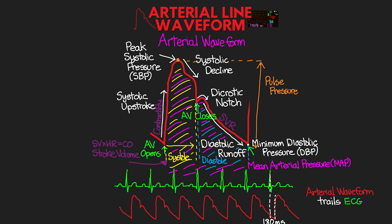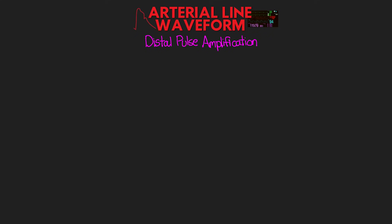Now that we have an understanding of what the arterial pressure tracing is, I want to cover distal pulse amplification in a little more detail. As mentioned in that previous lesson, the more distal our pressure reading is, the higher the peak systolic pressure that we see. This is due to the reflection of the pressure wave against those smaller vessels further down the line, and what happens is we see an augmentation of the arterial pressure tracing. That reflective wave is going to augment or increase that systolic blood pressure.